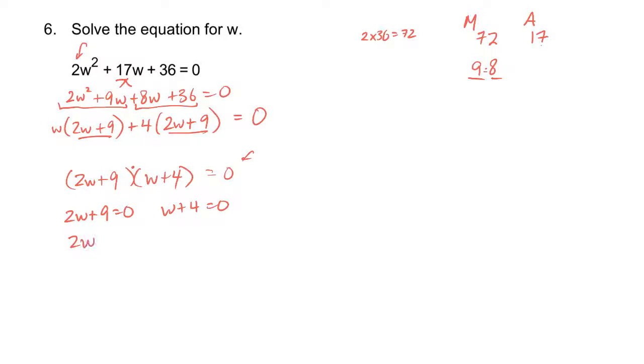So here I'll move the nine over, and then I'll divide both sides by two. Here I'll just move the four over to the other side. So those are my two answers for that question. And you could take the number and plug it back in everywhere you see a w, and hopefully you're going to come up with zero. If you don't, then we did something wrong. I'm pretty confident we did it right, though. But I've been wrong before.